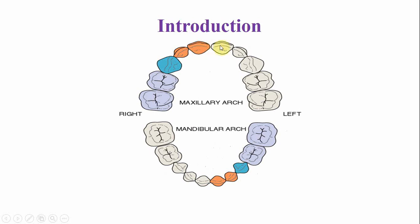There are two central incisors — this is the central incisor of the right side and this is the central incisor of the left side. These central incisors in general resemble the permanent successors with some exceptions; for example, the size of the tooth is smaller. They perform the same cutting function and follow the same general shape.